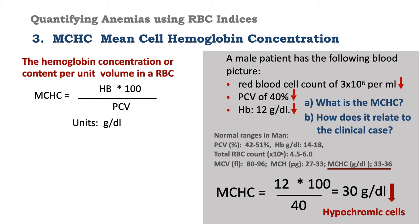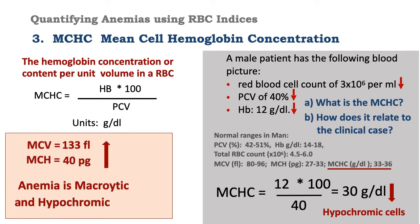This value is low, and it shows that the cells are hypochromic. If it was increased, it would have shown that the cells are hyperchromic. So how do we define this anemia? We had an increase in mean corpuscular volume of 133 femtolitres, which is far increased from the normal MCV of about 80 to 96 femtolitres. MCH was also increased at 40 picograms. And now we are seeing that MCHC, or mean corpuscular hemoglobin concentration, is decreased, meaning that we have hypochromic cells.